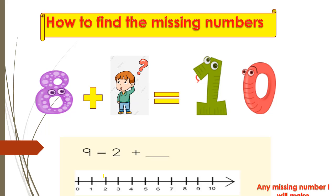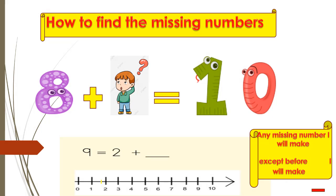Where is number two? Here is number two. So I want to go to number nine, because any missing number I will make minus — except before and minus, I will make plus. What is the meaning of minus? I'll count after the smallest to reach the greatest.